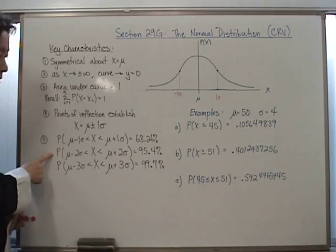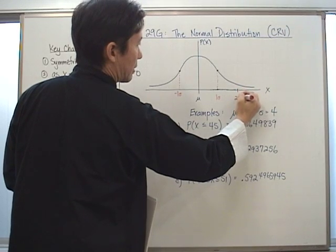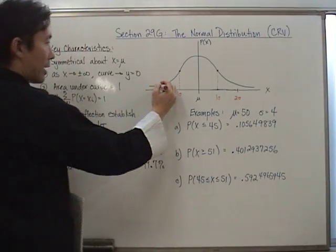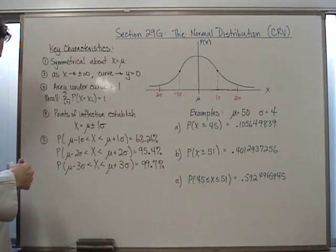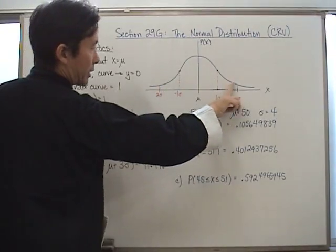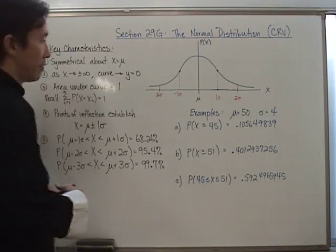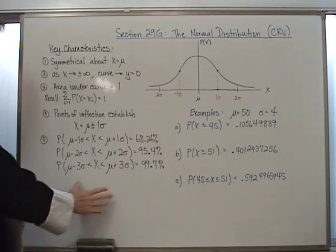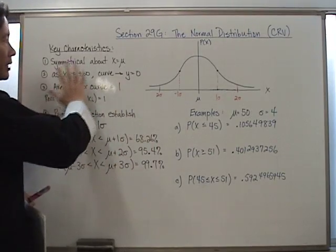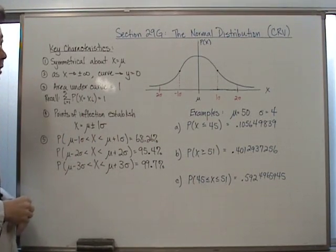If you go out two standard deviations away from the mean in either direction, the area contained from here all the way to here would be 95.4% of your probabilities. And if you go to three standard deviations, you come up with 99.7% of your information. These are things we've already investigated in previous chapters.